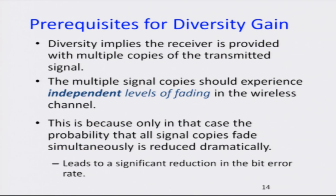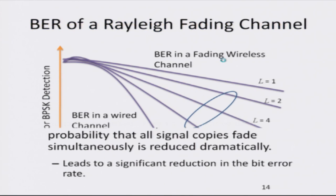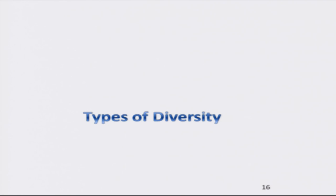There are various forms of diversity, and as you can see, as the number of antennas increases — for instance, for L equals 1, as the number of antennas increases to 2, the bit error rate decreases significantly. For 4, 8, and so on, the bit error rate progressively keeps decreasing, which means the quality of bit transmission is progressively improving.